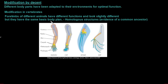Next is modification by descent. Different body parts have been adapted to the environment for optimal function in their specific environments. We're looking at modification in vertebrates, specifically the forelimbs of different animals that have different functions and look slightly different but have the same basic body plan. We call these homologous structures - homologous literally means same location. This is evidence for a common ancestor.